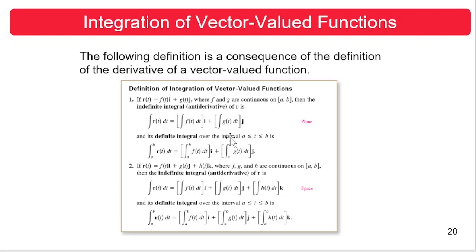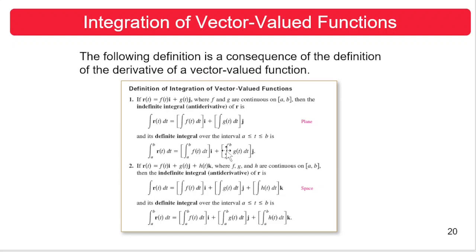Its corresponding definite integral over the interval where t is from a to b, with endpoints included, is defined as: the integral of r of t dt from a to b equals the integral of f of t dt from a to b times i, plus the integral of g of t dt from a to b times j.